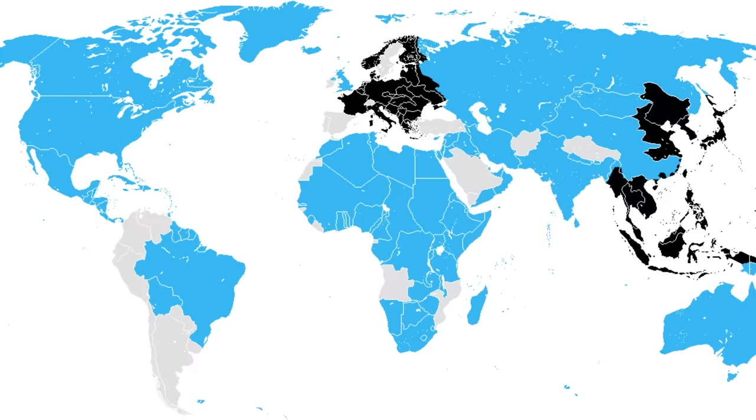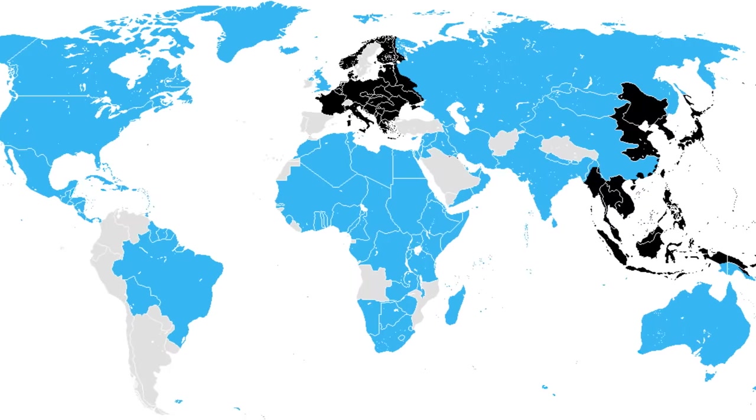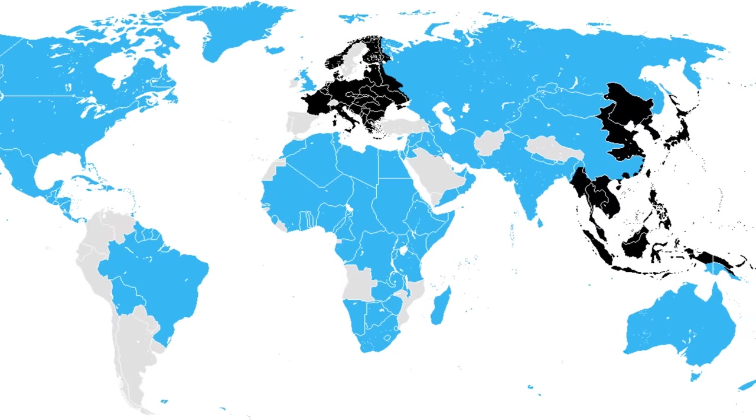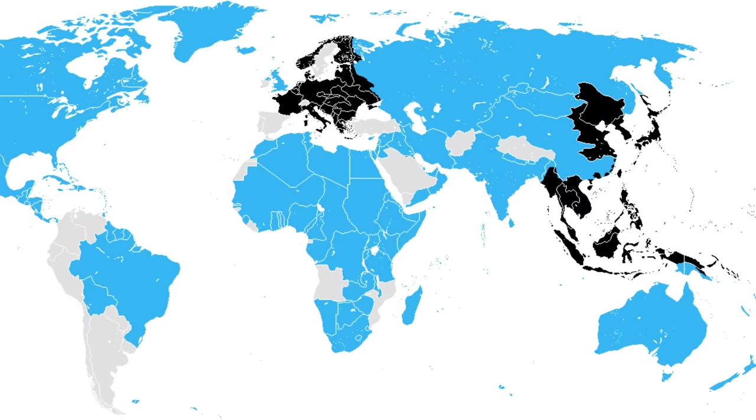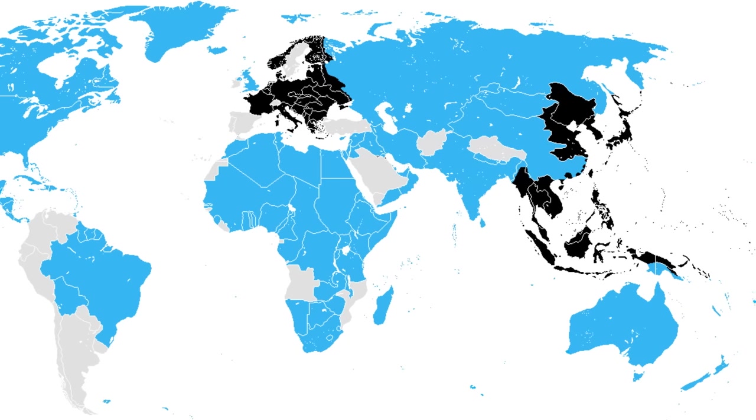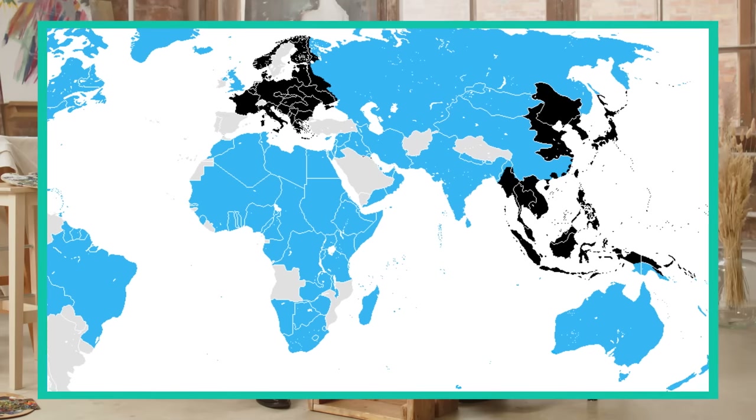they reconstructed the true state of the industry, infrastructure, and armed forces of the Axis countries. Initially, only $150,000 was allocated for the development of the service, but it soon proved its effectiveness. It turned out that information in open sources can tell us a lot.